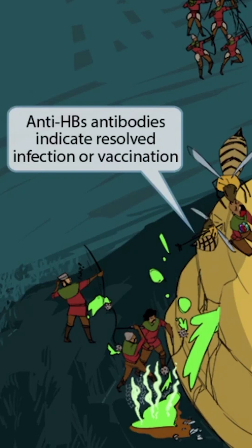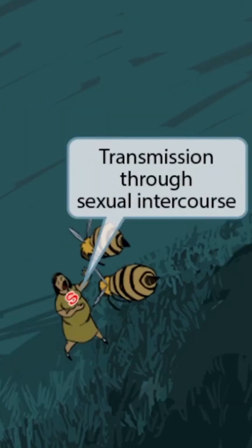If there are antibodies against the surface antigen, then the patient has immunity. Surface antibodies can come from vaccination or through fighting off the viral infection yourself. This means that if you see anti-surface antibodies, you don't know whether the patient obtained them through vaccination or from an old infection.